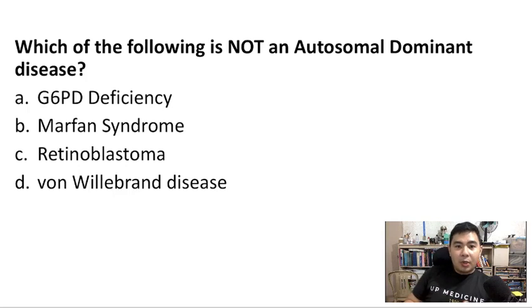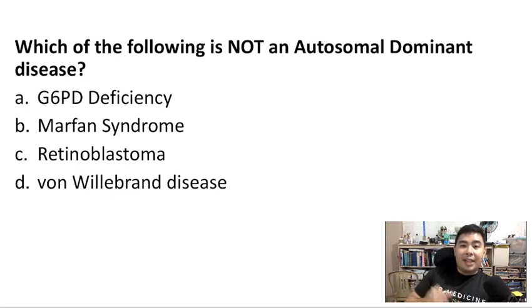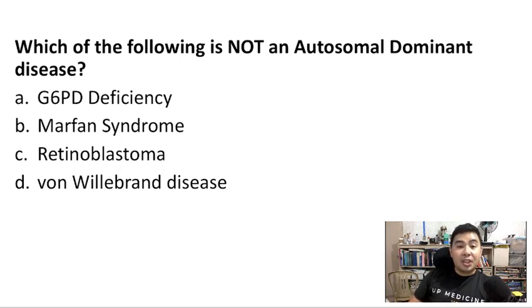So here's a sample question: Which of the following is not an autosomal dominant disease? Is it G6PD deficiency, Marfan syndrome, retinoblastoma, or von Willebrand disease?